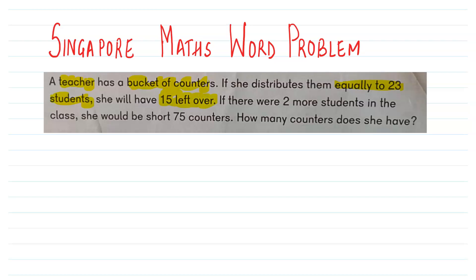So now, what does it mean? How can we represent this using a bar model? She had some counters. These are the counters she is having. She distributed them among 23 students and she was left with 15. So let's first take out the 15 counters that she was left with.